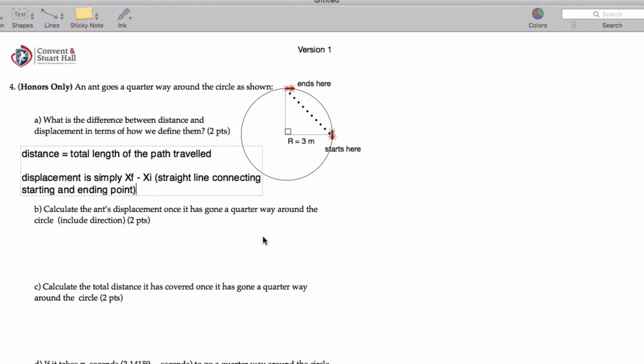Now, let's calculate the ant's displacement once it's gone a quarter way around the circle. So the displacement, this is 3 meters, this is 3 meters. So what I would say is this is a 45-45-90 triangle. So that displacement is going to be 3 radical 2.